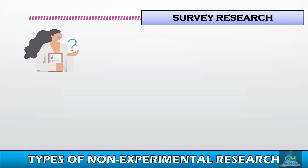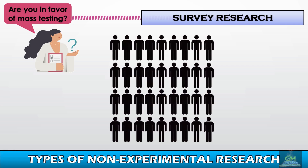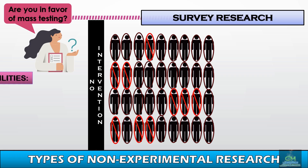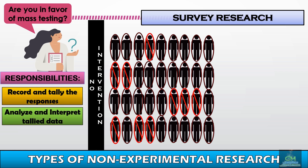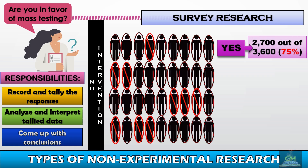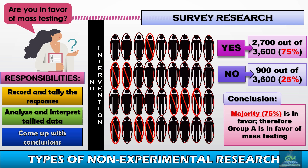For example, a researcher wants to conduct a survey on the preference of individuals towards mass testing. She identifies participants and gives them questionnaires to answer. In survey research, there is no intervention — the researcher only waits for respondents to give their answers. The researcher's responsibilities focus on recording and tallying responses, analyzing and interpreting the data, and drawing conclusions. In this example, 75% answered yes and 25% answered no, leading to the conclusion that the majority — Group A — is in favor of mass testing.